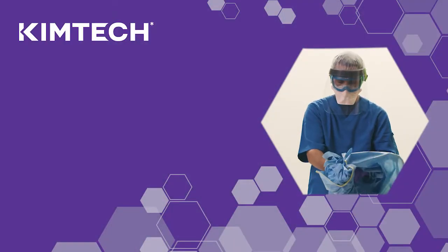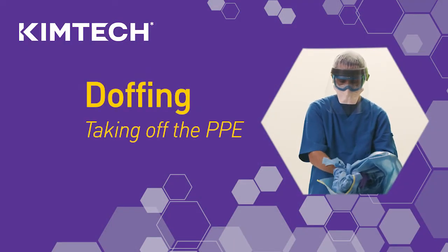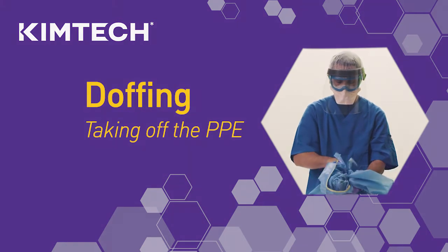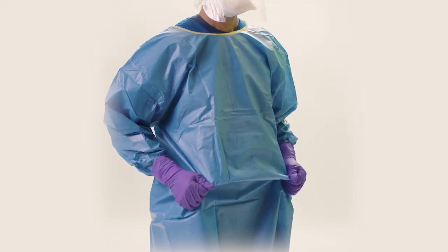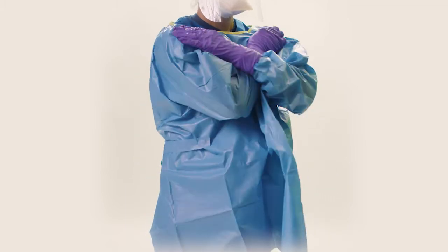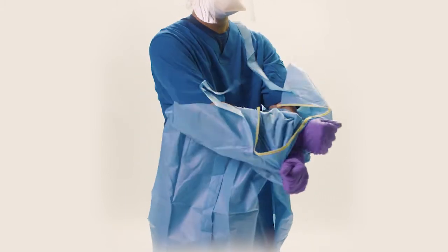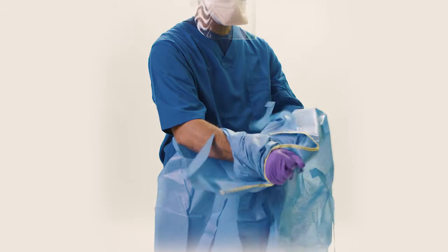Let's move on to doffing or taking off the PPE. Remove the gown by firmly grasping it from the outside at the waist. Pull up and out to break the ties at the lower back. Pull forward to break the ties at the neck.